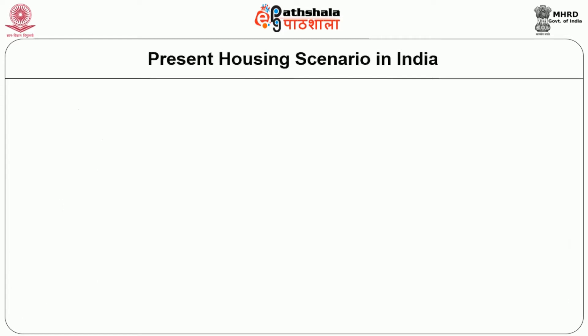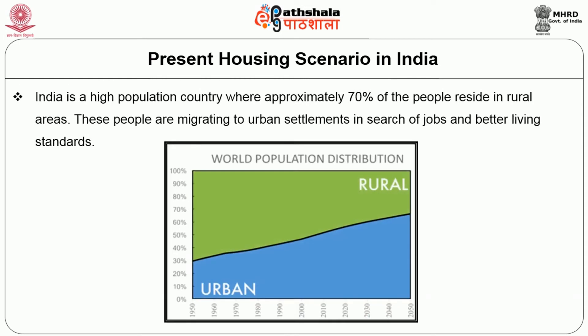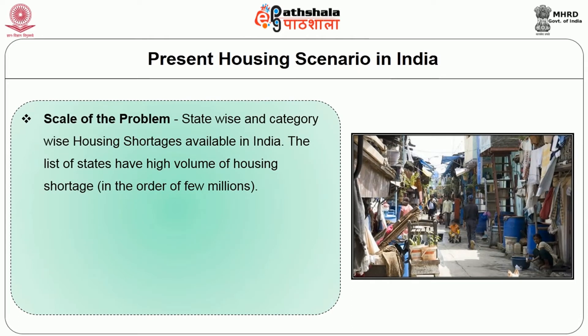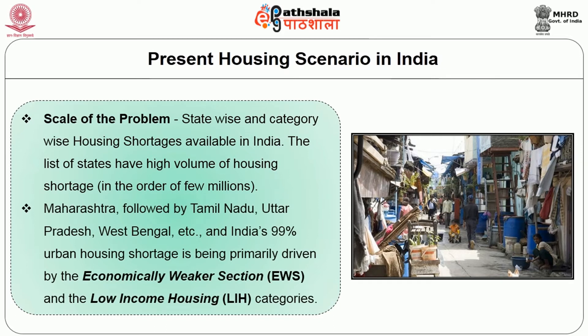India is a high population country where approximately 70% of the people reside in rural areas. These people are migrating to urban settlements in search of jobs and better living standards. State-wise and category-wise housing strategies are available in India. States with high volume of housing shortage include Maharashtra, followed by Tamil Nadu, Uttar Pradesh, West Bengal, etc. India's 99% urban housing shortage is primarily driven by the economically weaker section (EWS) and the low income housing (LH) categories.